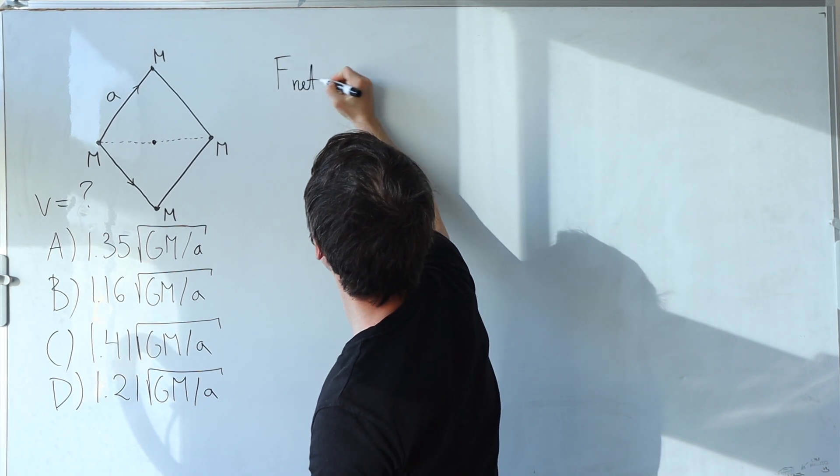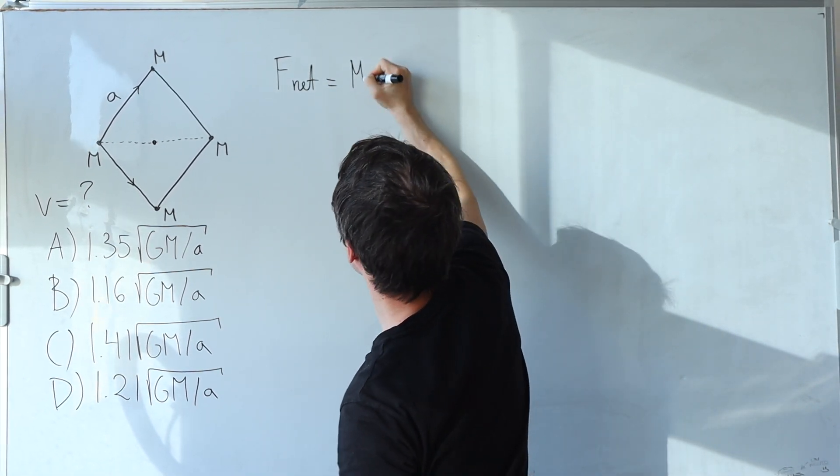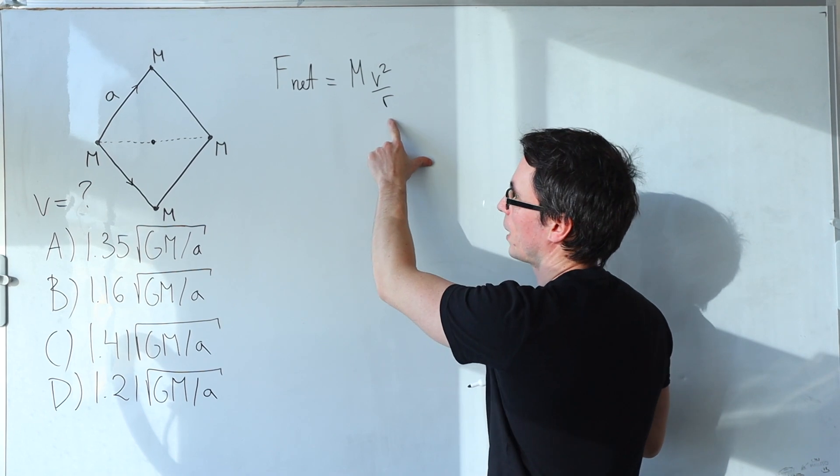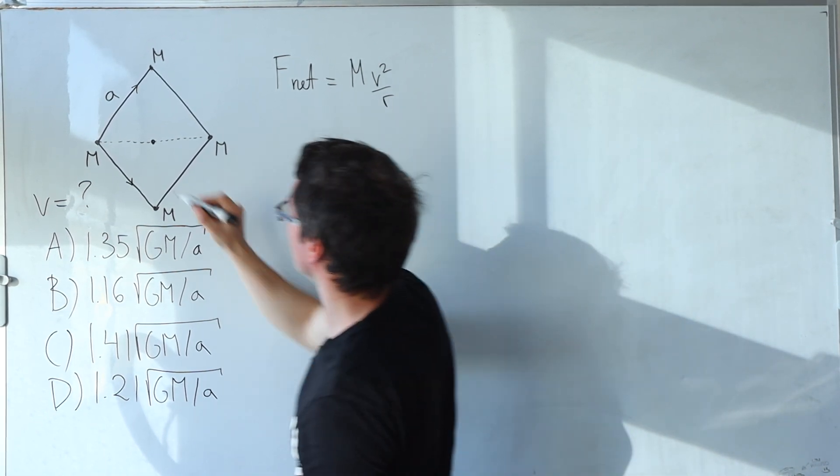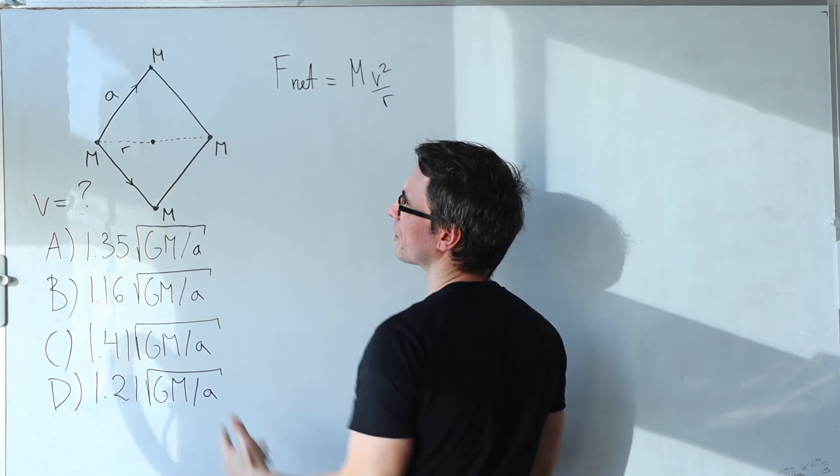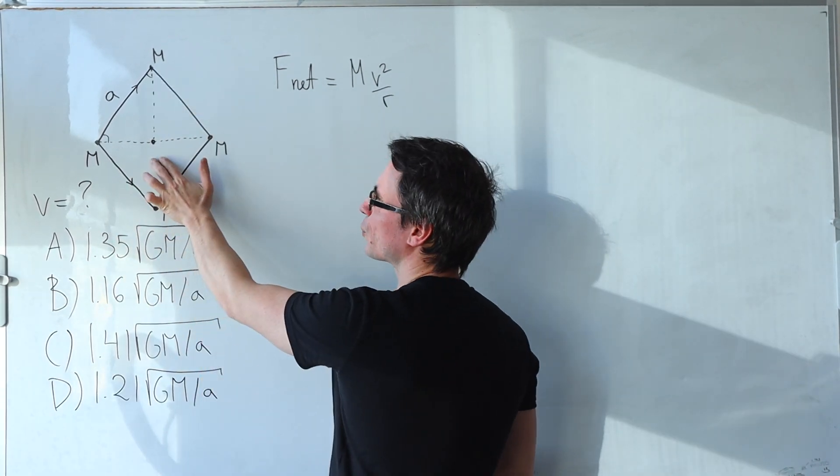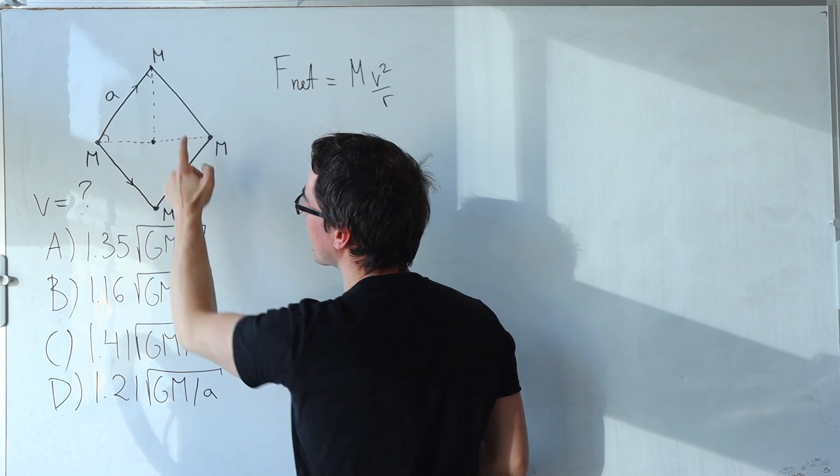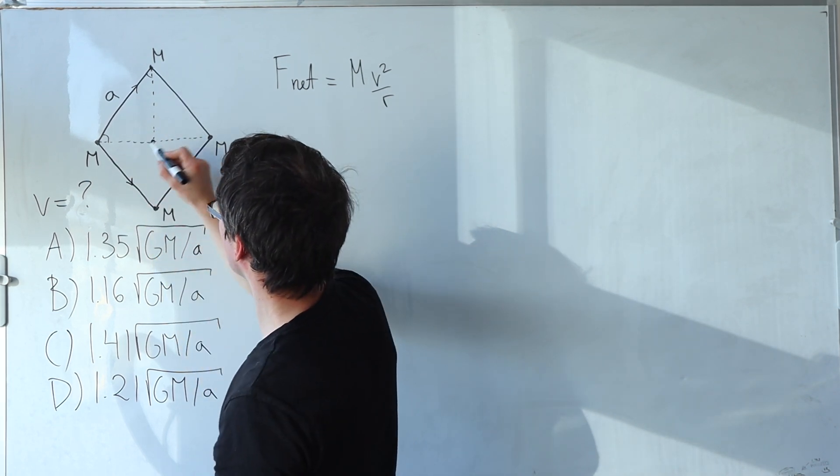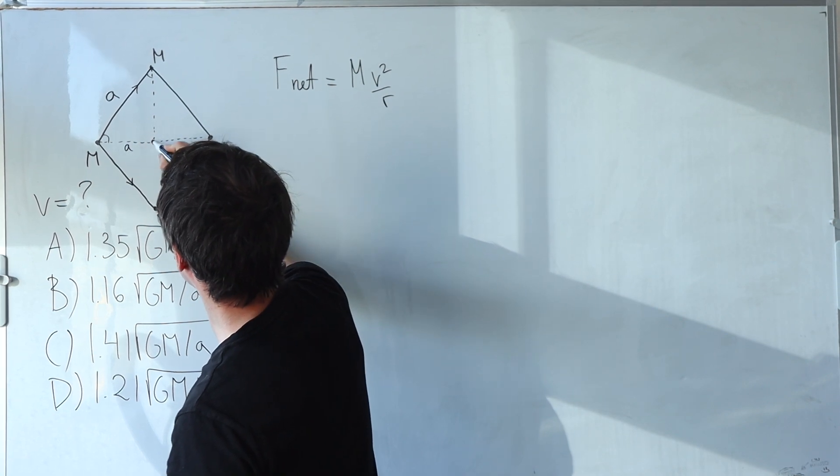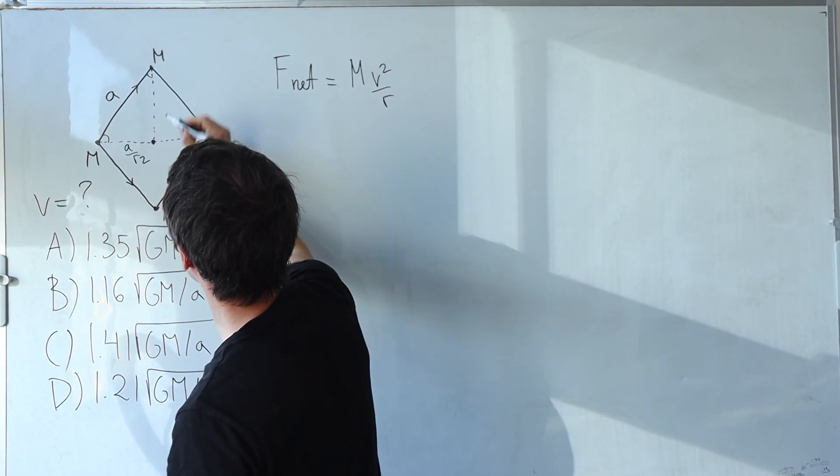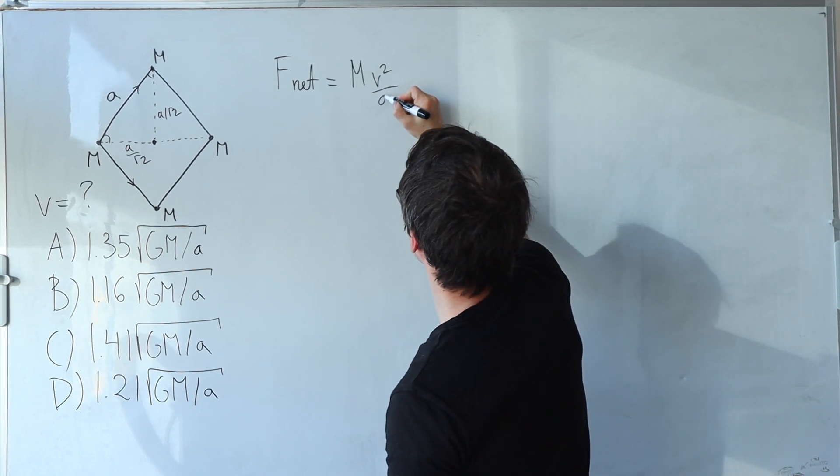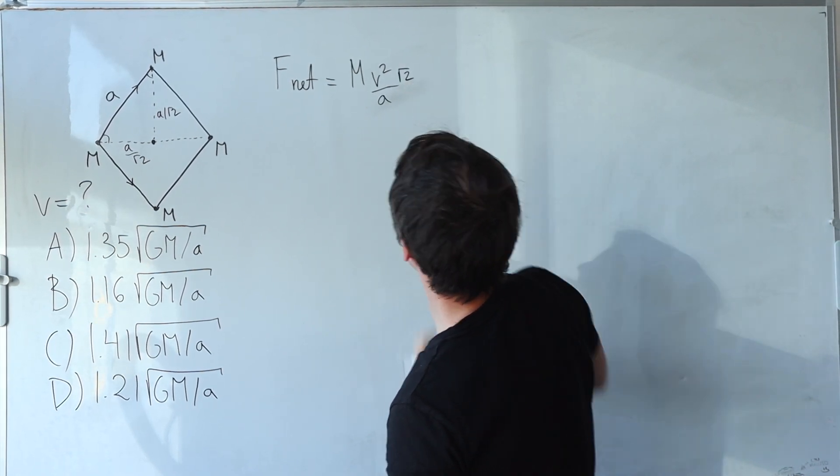So we can write that the net force will be given by the mass times the centripetal acceleration which is going to be v squared divided by the radius. Now talking about the radius, let's express this in terms of a. I've not quite drawn these to scale but this here should be a 45-45-90 degree triangle and if this side here is a, well then that will make from here to here a over root 2 and this side here will also be a over root 2. So rather than r I'm just going to write a divided by root 2.